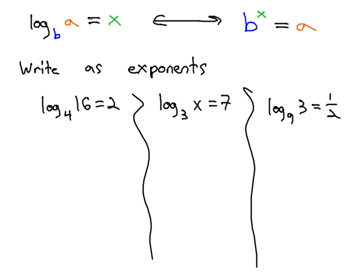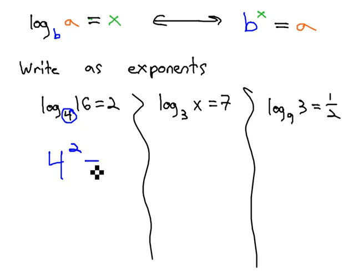We have three examples here that we can rewrite in exponent form. The base we always know is the little subscript, so we have a base of 4. The exponent is always what it equals. 4 to the power of 2 equals the inside number of 16 — and sure enough, 4 squared does equal 16.